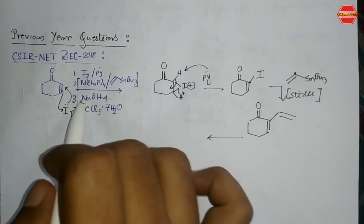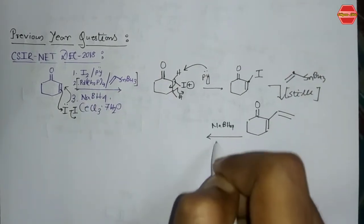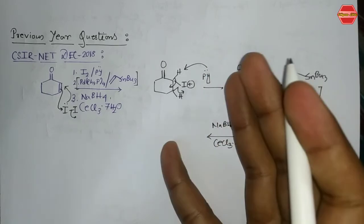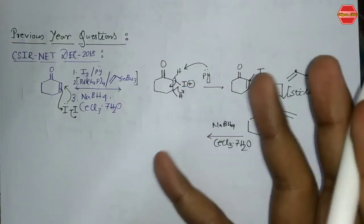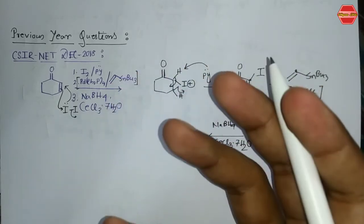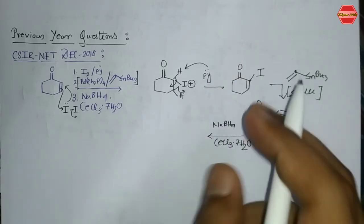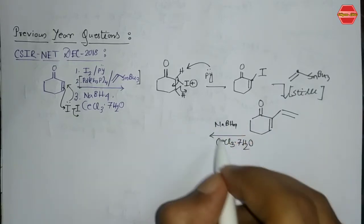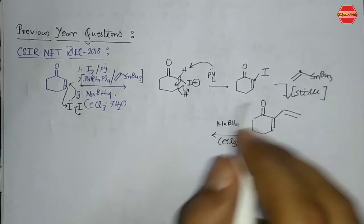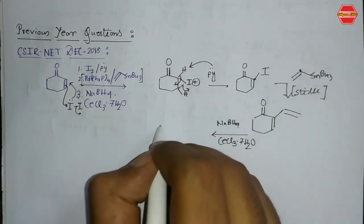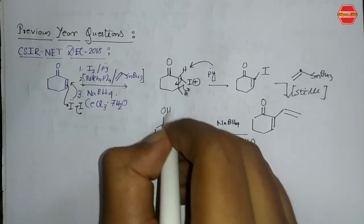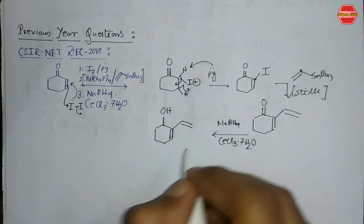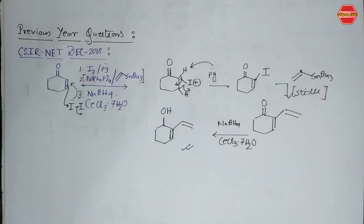In Step 3, sodium borohydride with cerium trichloride (CeCl3) is the Luche reduction. If you don't know how the Luche reduction works, I have already made a video on reduction reactions covering all related topics — check the description box for the link. The Luche reduction selectively reduces the ketone to an alcohol without affecting the double bond. So the final product has the ketone converted to an alcohol while the double bonds are preserved.